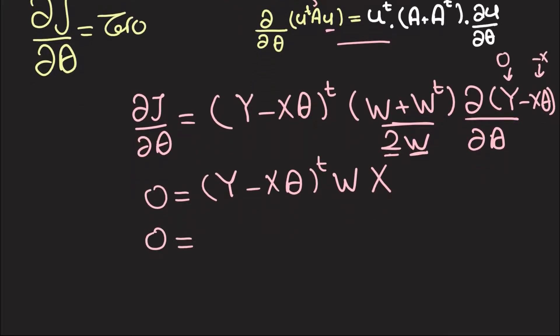So, we have 0 equals x transpose w transpose multiplied by y minus x theta. Let us introduce this into these 2 terms, so we get 0 equals x transpose w transpose y minus x transpose w transpose x theta.